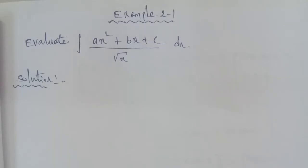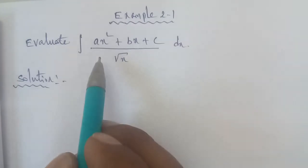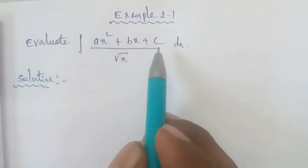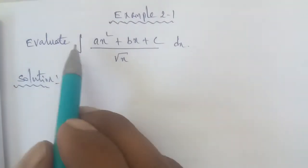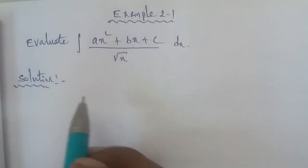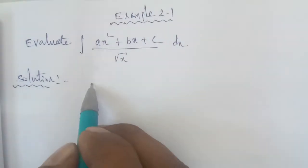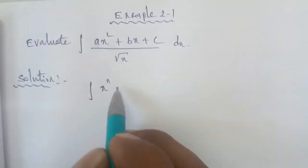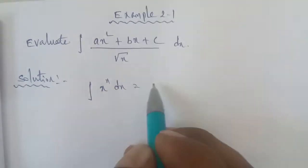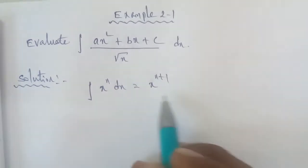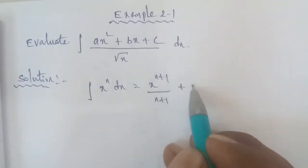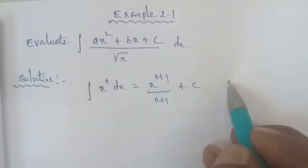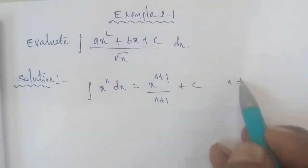Hi students. 12 Business Maths, Example 2.1. Evaluate the integral of (ax² + bx + c) divided by root x, dx. First is the integration formula: the integral of x power n dx is equal to x power of n plus 1, divided by n plus 1, plus constant c, where n is not equal to minus 1.